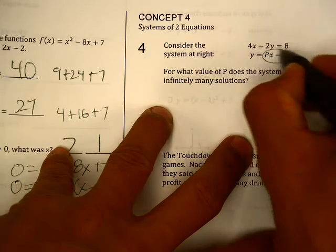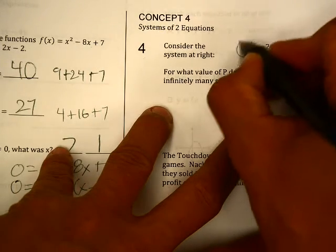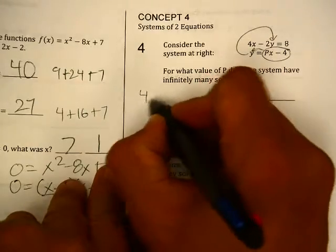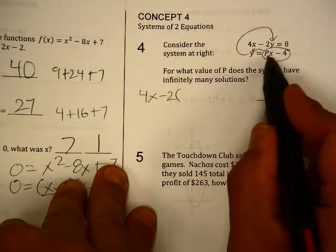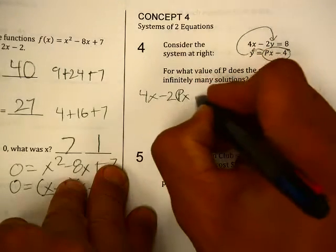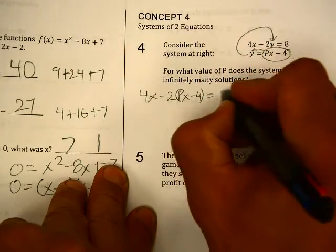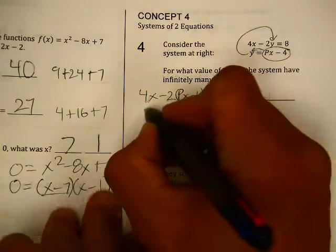We'll substitute this in for y right here. So we have 4x minus 2 times, now I'm substituting in for y, px minus 4 equals 8. Do the distributive property.